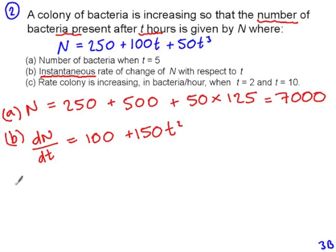And in part C, we want the rate at which the colony is increasing in bacteria per hour when T is 2 and when T is 10. So this just means substituting in the values of 2 and 10 into the instantaneous rate of change we found in part B.